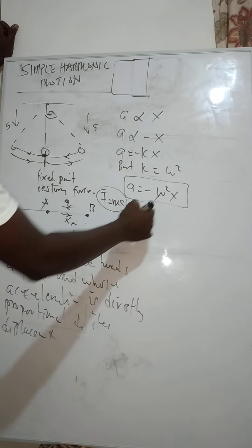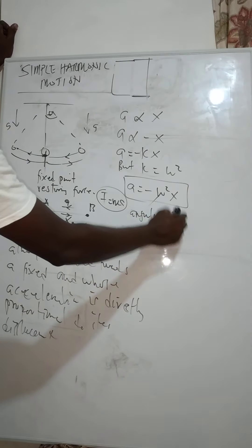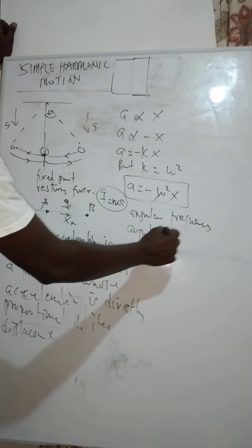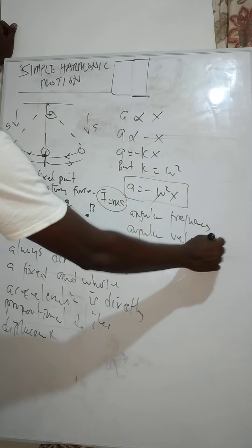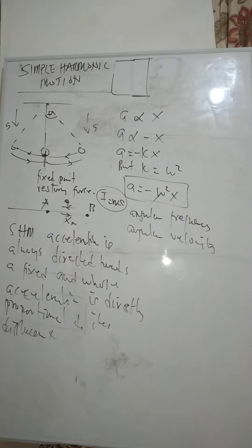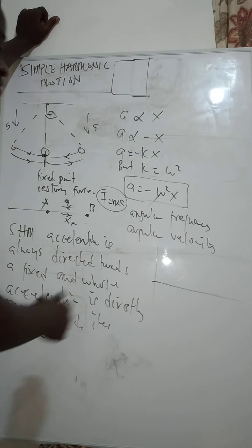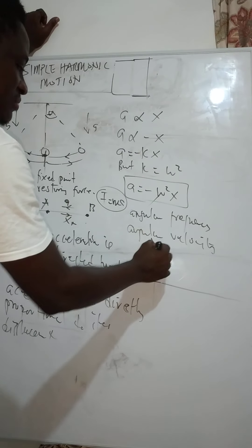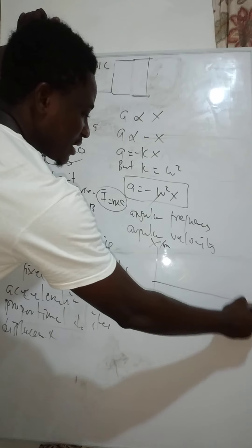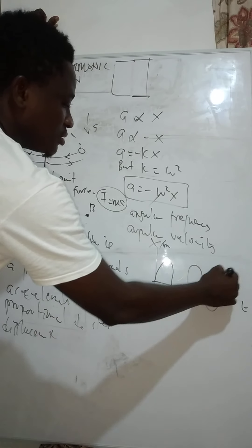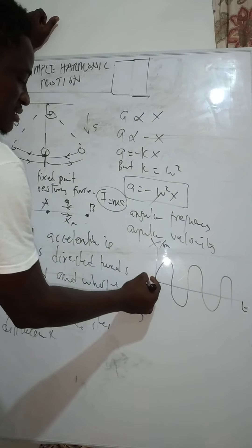Omega is our angular frequency, also called our angular velocity. Any object that undergoes simple harmonic motion can be represented by a sinusoidal curve. The displacement x in meters against time t is represented by this type of curve, starting from zero.